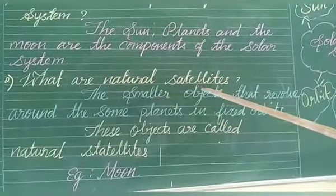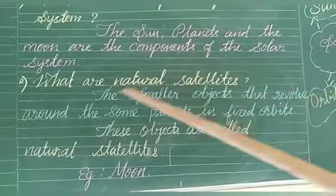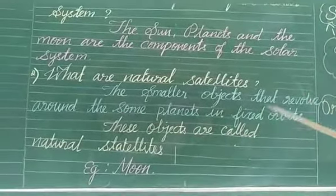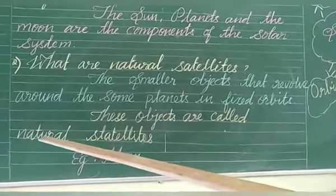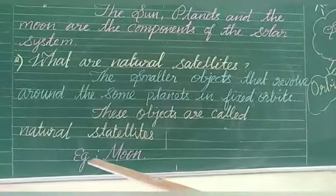The smaller objects that revolve around some planets in fixed orbits. These objects are called natural satellites. Example: Moon.